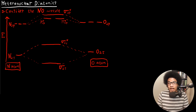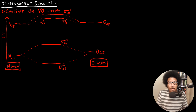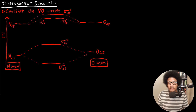This MO diagram is unfinished and we're going to fill it in. Let's consider the NO molecule — nitric oxide. The basics of the molecular orbital diagram are going to remain unchanged. On the left-hand side we have the nitrogen atom with 2s and 2p orbitals, and on the right-hand side we have the oxygen atom with the oxygen 2s and oxygen 2p. The 2s orbitals are going to split to give a sigma 2s bonding orbital and a sigma star 2s antibonding orbital.